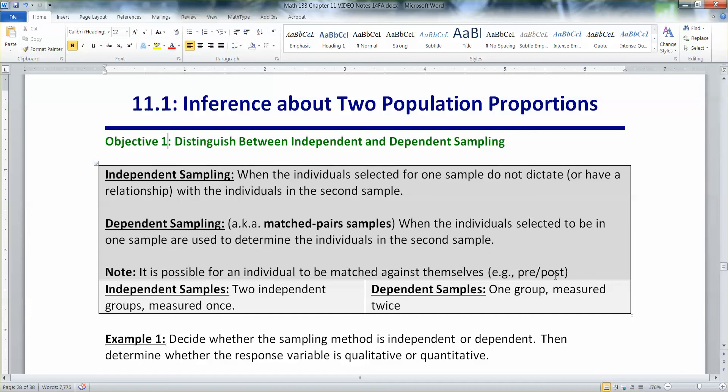Or, better yet, pre-test, post-test. So it's one person matched against themselves. And that happens with proportions. If I ask you one question, then I ask you another question, that's a dependent sample because you're being measured against yourself.